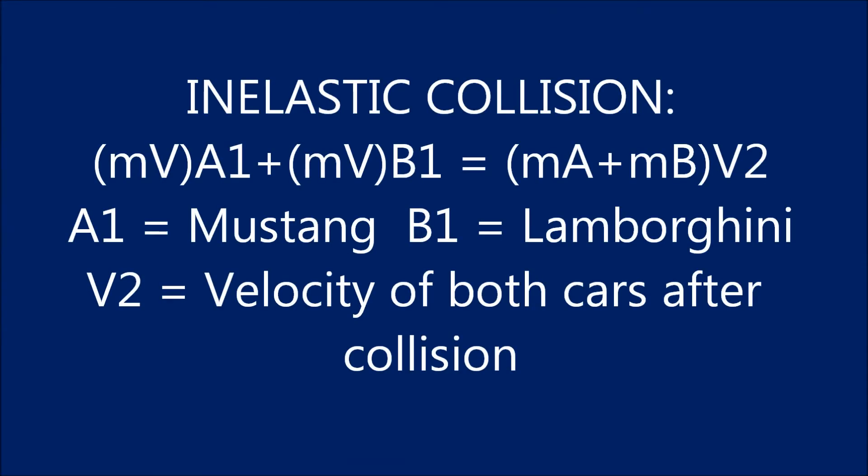When solving an inelastic collision, we use the formula MVA1 plus MVB1 is equal to MA plus MB multiplied by V2. When A1 is equivalent to the Mustang, B1 represents the Lamborghini, and V2 is equal to the velocity of both cars after the collision.